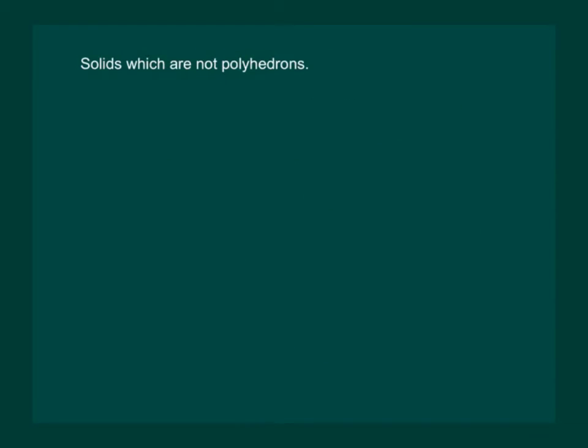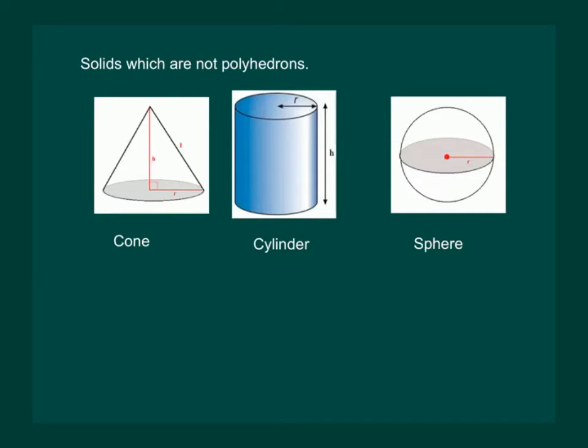Let us now look at some solid shapes which are not polyhedrons. Look at these solid shapes: a cone, a cylinder, and a sphere. We can say that all three are not polyhedrons because they are not made of polygons, or in other words, because in their shapes there are circles included and we have already discussed that circle is not a polygon.